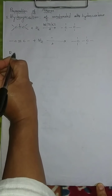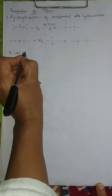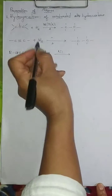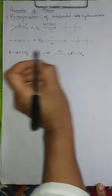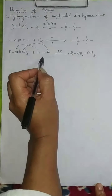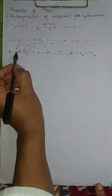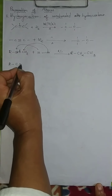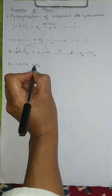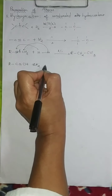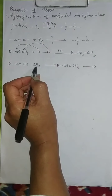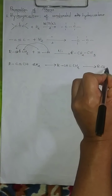For example, if we take R–CH=CH2 and add dihydrogen with a catalyst like nickel, the pi bond breaks and one hydrogen attaches to each carbon atom to give the alkane. For alkynes with a triple bond, two molecules of hydrogen add up: the first reaction forms an alkene, and then further reaction with the remaining one molecule of hydrogen gives the alkane.